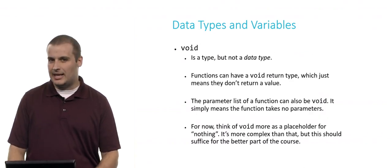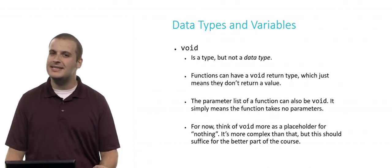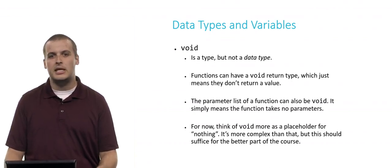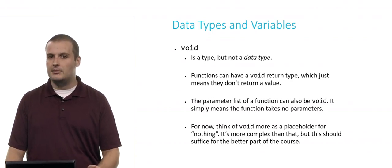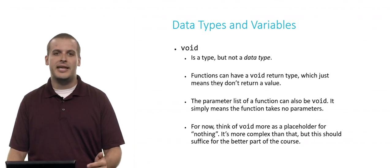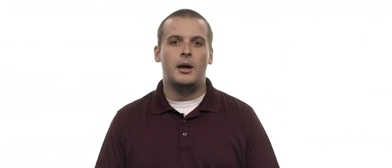Now, this is not a data type. This is a type, and it's called void. And I'm talking about it here because we've probably seen it a few times already in CS50, and you might be wondering what it's all about. So void is a type. It does exist, but it's not a data type. We can't create a variable of type void and assign a value to it. But functions, for example, can have a void return type. Basically, if you see a function that has a void return type, it means it doesn't return a value. Can you think of a common function that we've used so far in CS50 that doesn't return a value?